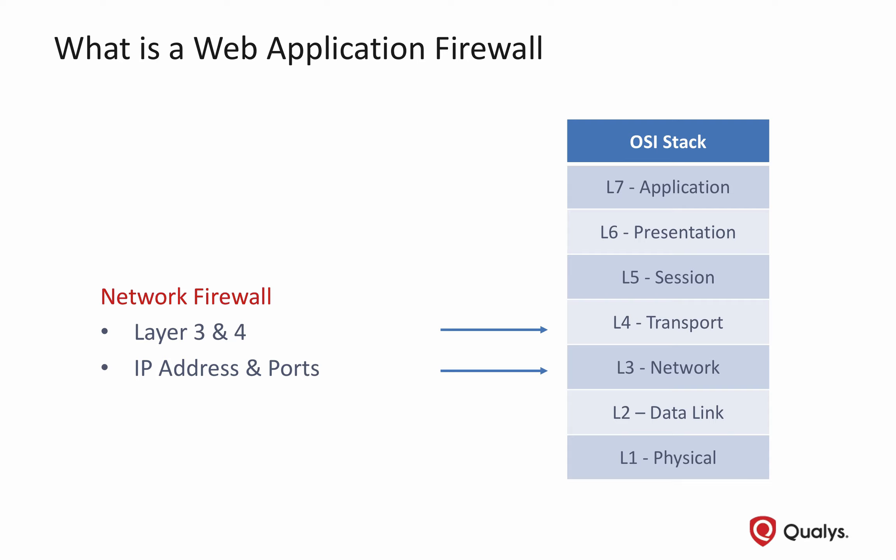Traditional firewalls perform packet filtering and stateful inspection which focus on layer 3 and layer 4. The primary function of a traditional network firewall is providing access control and policing which application traffic is allowed to transit across the network boundary where it's deployed. These devices provide limited protection for web application attributes.